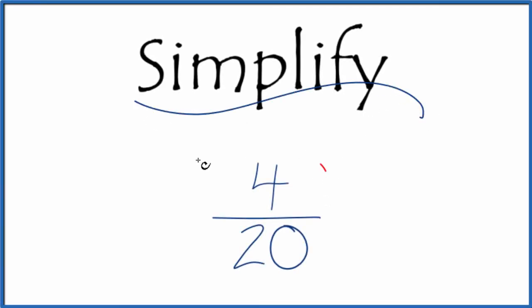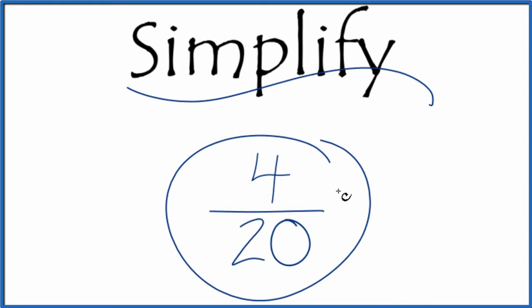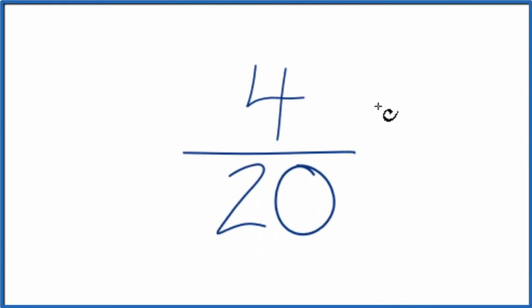Let's simplify the fraction 4 over 20. And what we want to do is we want to find another fraction that's equivalent, that has the same value as 4 over 20, but is in simplest terms.